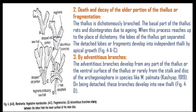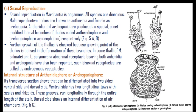The third type of vegetative reproduction is adventitious branches. Adventitious branches develop from any part of the thallus, the ventral surface, or rarely from the stalk and disc of the archegoniophore, as in species like palmata, reported by Keshav in 1919. On being detached, these branches develop into new thalli.